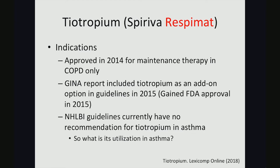Looking at the indications for tiotropium, it was approved in 2014 for maintenance therapy in COPD only — so its first major approval was actually in COPD and not asthma. Then in 2015 it gained approval for asthma, which led to it being introduced in the GINA guidelines. Currently, the National Heart, Lung, and Blood Institute guidelines have no recommendation for tiotropium in asthma, likely because the guideline has not been updated since 2007. This still begs the question: what is the utilization of tiotropium in asthma patients?